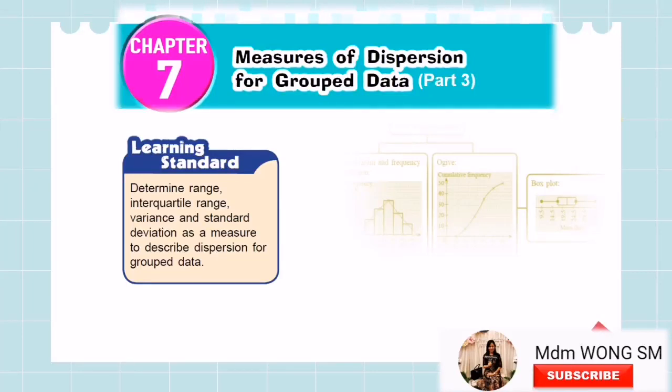After we learn how to construct an ogive for a set of grouped data, today we are going to learn how to determine range, interquartile range, variance and standard deviation as measures to describe the dispersion for grouped data.